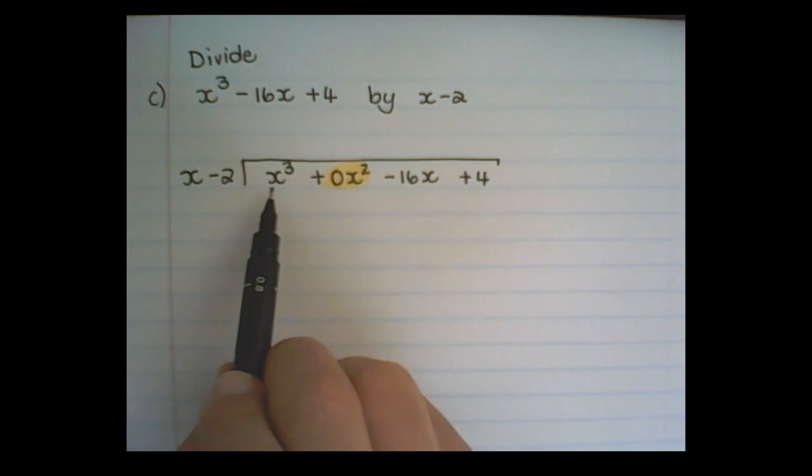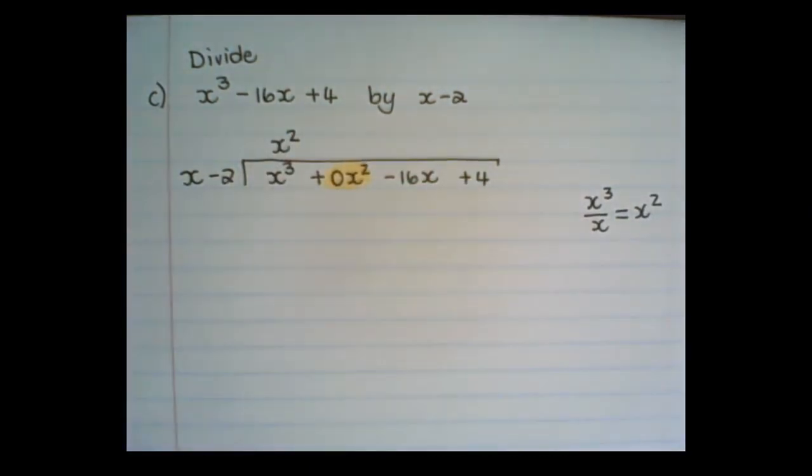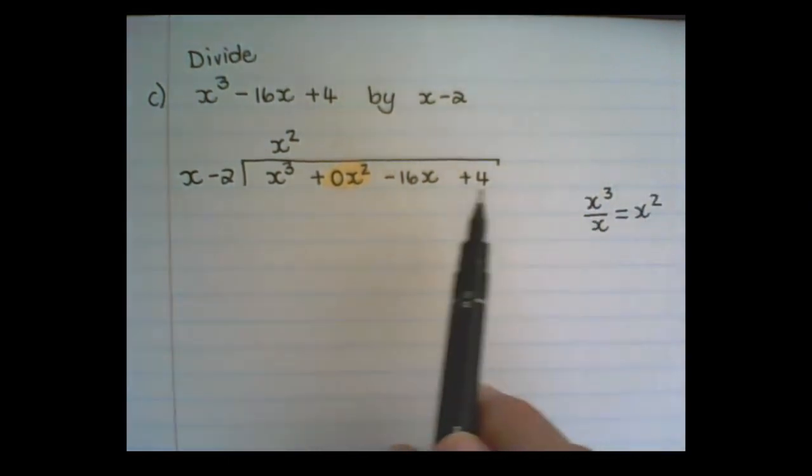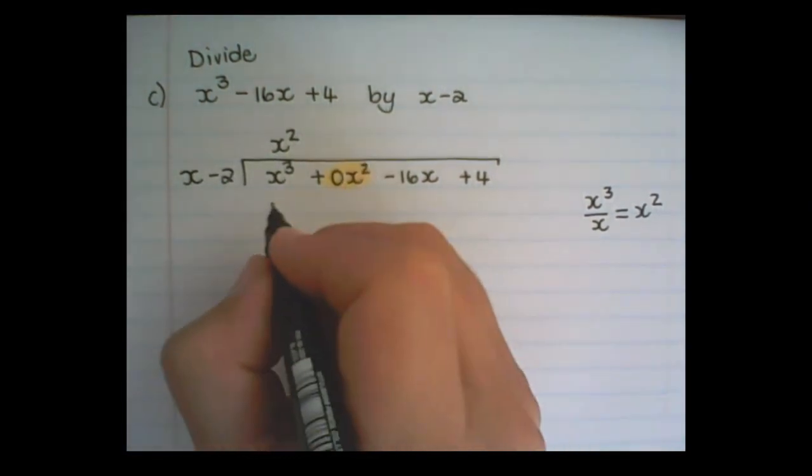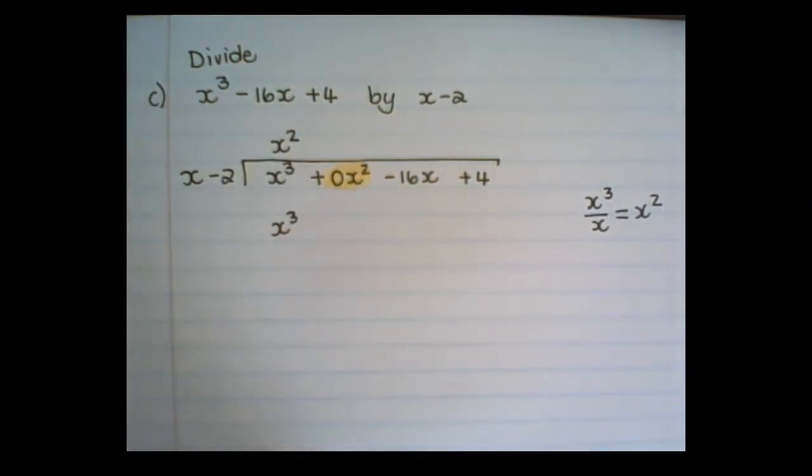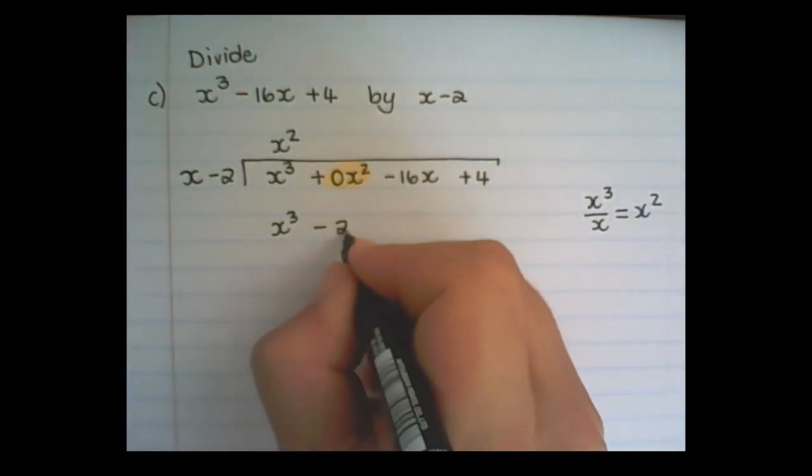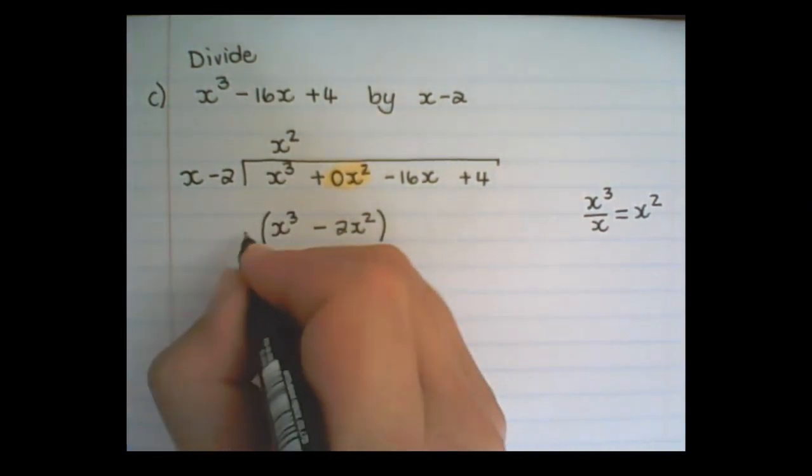So in the first step I have x cubed divided by x, and that produces x squared. You do not need to write the calculation on the side. This is simply me showing you what I am doing. Then I multiply x squared with x, that is x cubed. And then I multiply x squared with negative 2, that is negative 2x squared. And this is the part that I am subtracting.